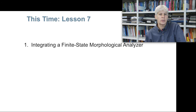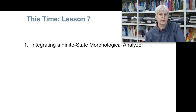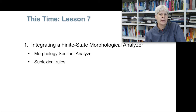This time we're going to move on and integrate a finite state morphological analyzer. This will make life much easier, because we won't have to maintain a full-form lexicon. For each verb you want to introduce, you won't have to write down 'wants', 'want', 'wanting', etc. — this will all come automatically out of the morphological analyzer. I'll show you how to integrate the morphological analyzer in the morphology section, and how to use the information coming out of it in XLE by writing sublexical rules in combination with sublexical entries.